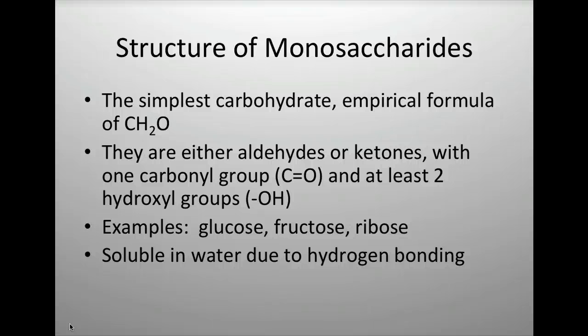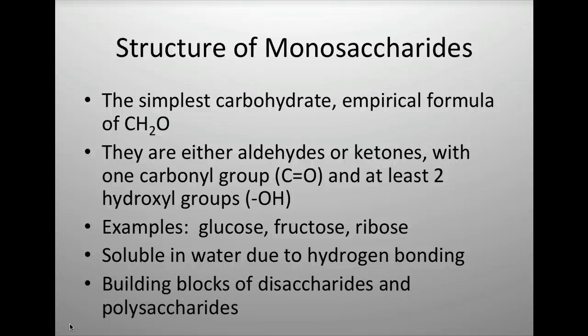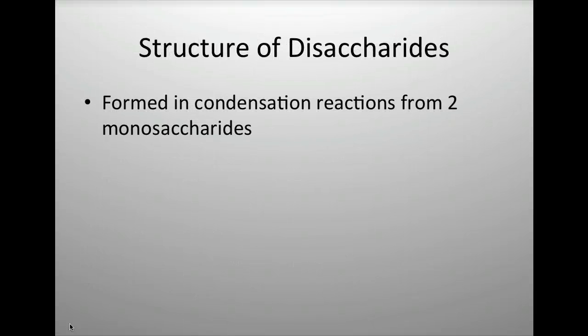Some examples of simple sugars include glucose, fructose, and ribose. They are soluble in water because the molecule size is small and they have at least two hydroxyl groups, so relative to molecule size those OH groups matter and make them water-soluble. When you take monosaccharides and put two together you form a disaccharide, three gives a trisaccharide, and many together gives a polysaccharide.